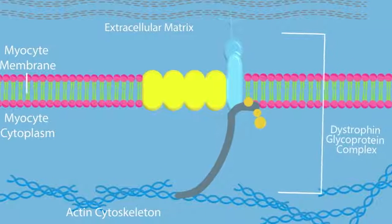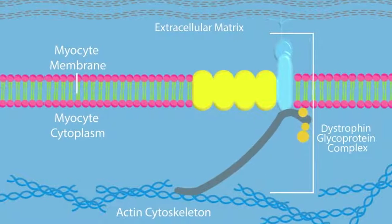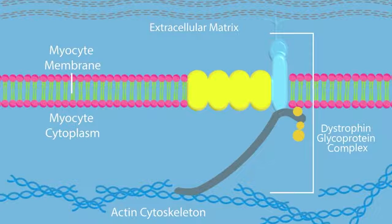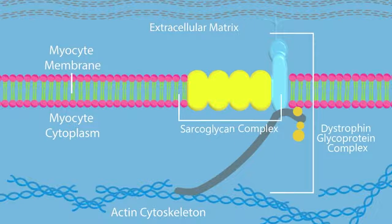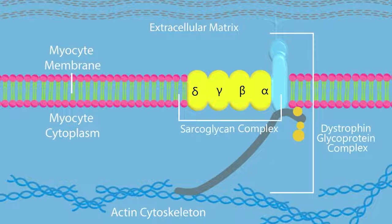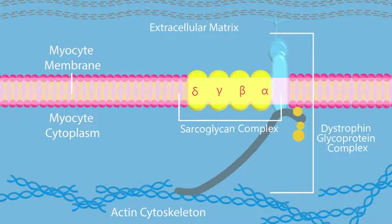The dystrophin glycoprotein complex is a critical structure in cardiac and skeletal muscle cell function and stability. Mutations to the genes involved in this protein complex can lead to muscular dystrophy, making it an important therapeutic target for research. It is tightly bound with the sarcoglycan complex, a set of four transmembrane proteins coded for by the gamma, alpha, beta, and delta sarcoglycan genes. The sarcoglycan complex has been shown in the literature to have a role in stabilizing the plasma membrane of both cardiac and skeletal muscle.